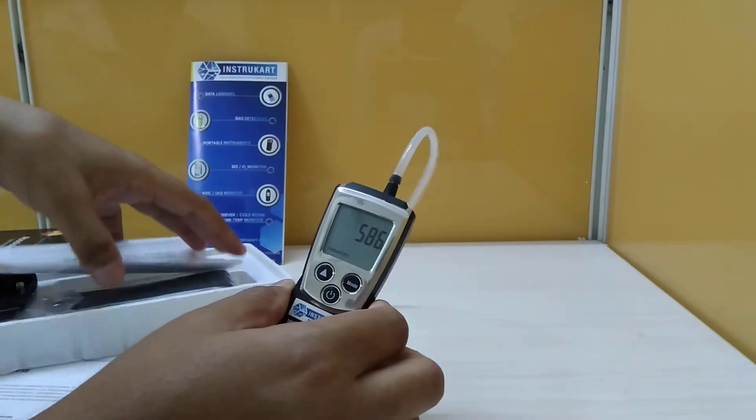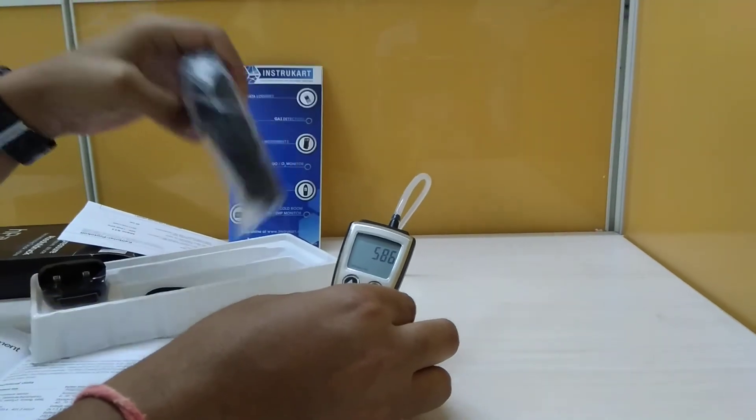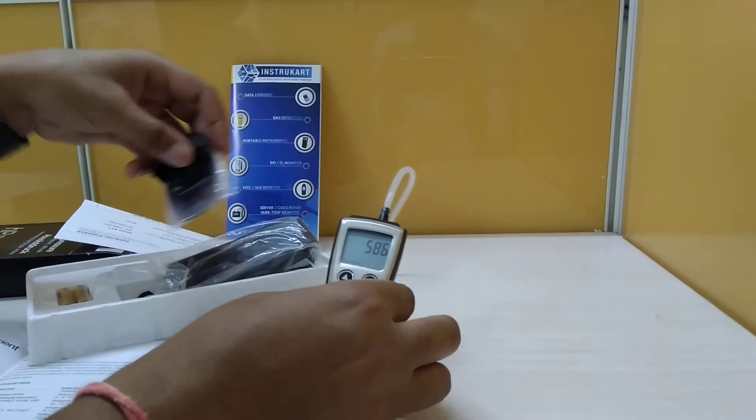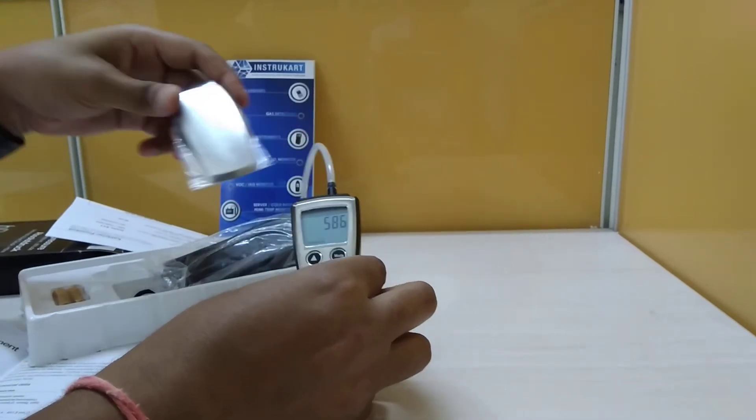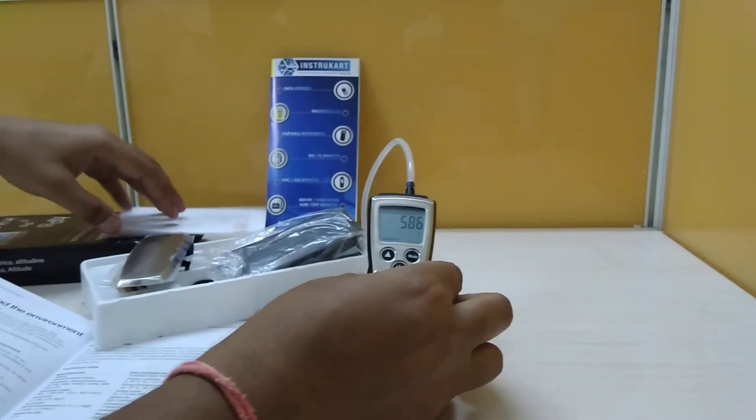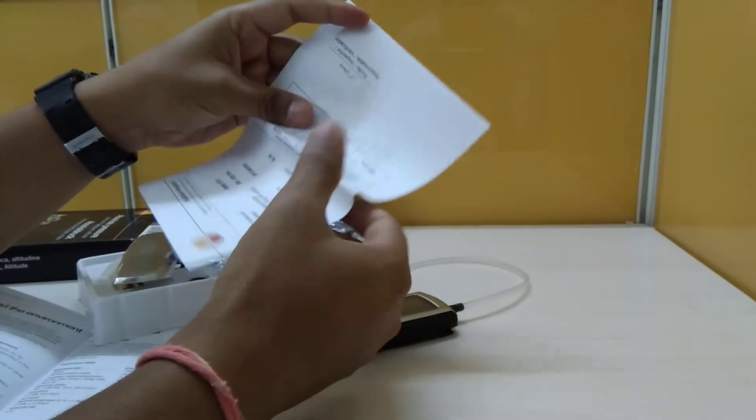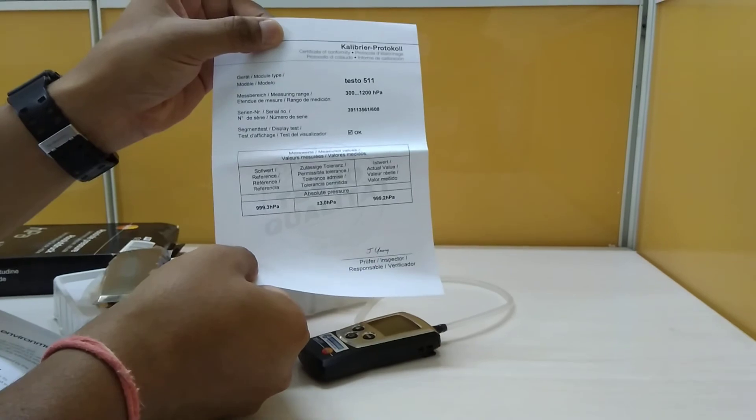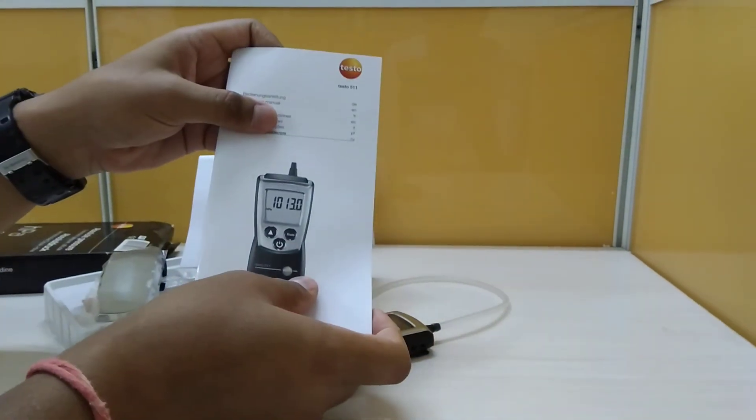This instrument comes with a standard set of accessories, which includes the carrying pouch and cover, and comes with a calibration certificate valid for one year, and of course the instruction manual.